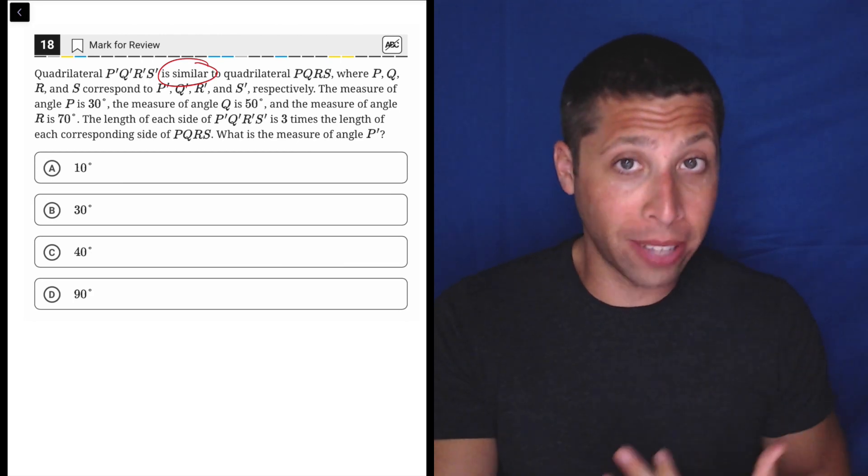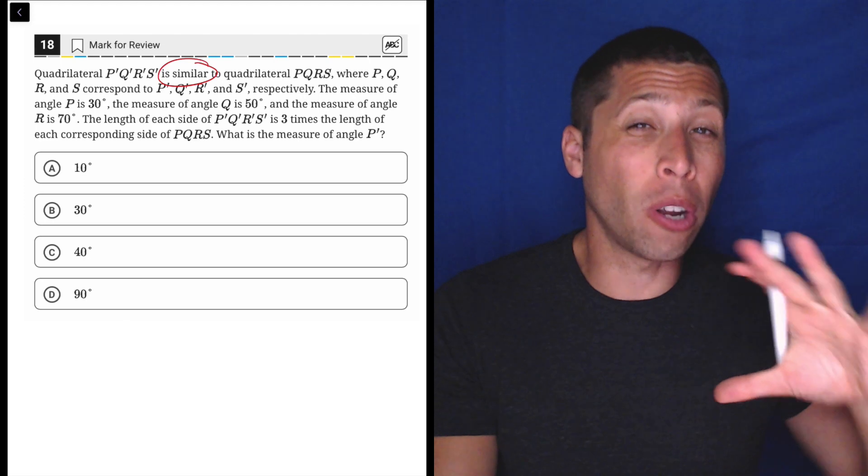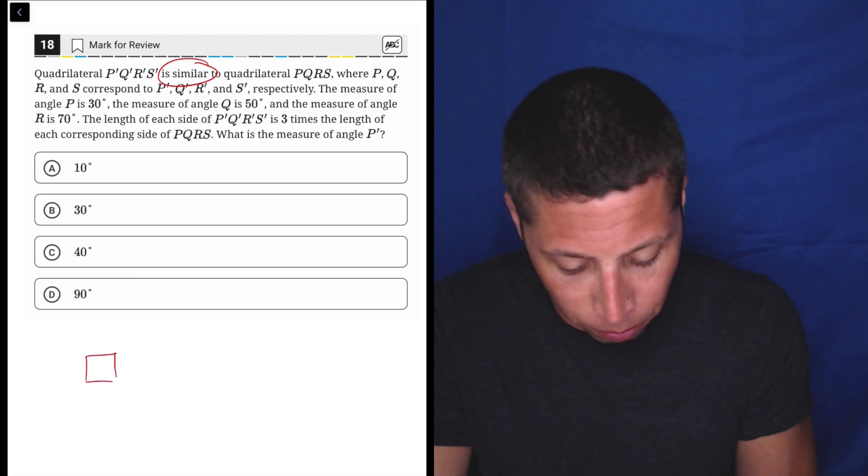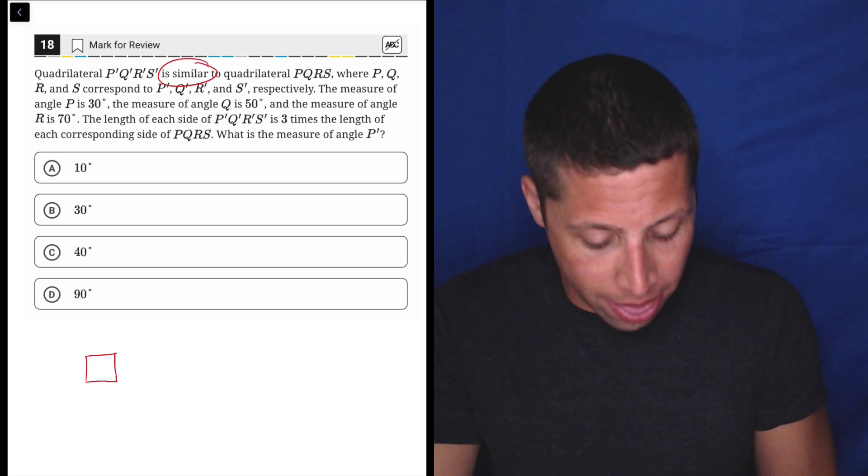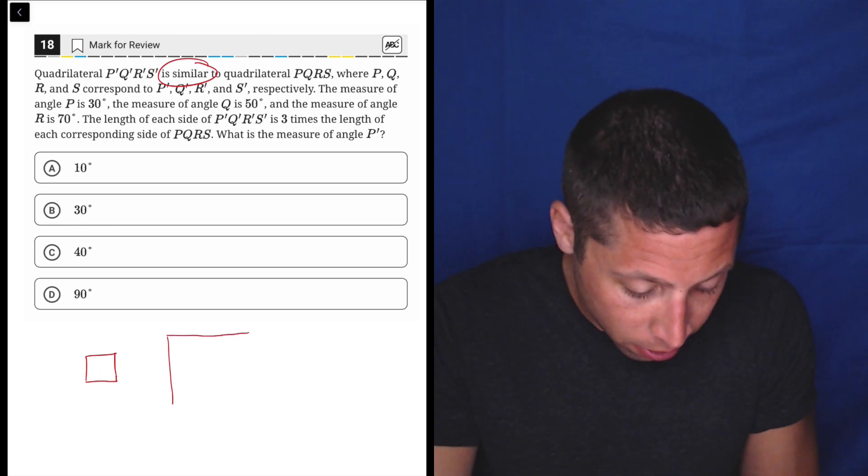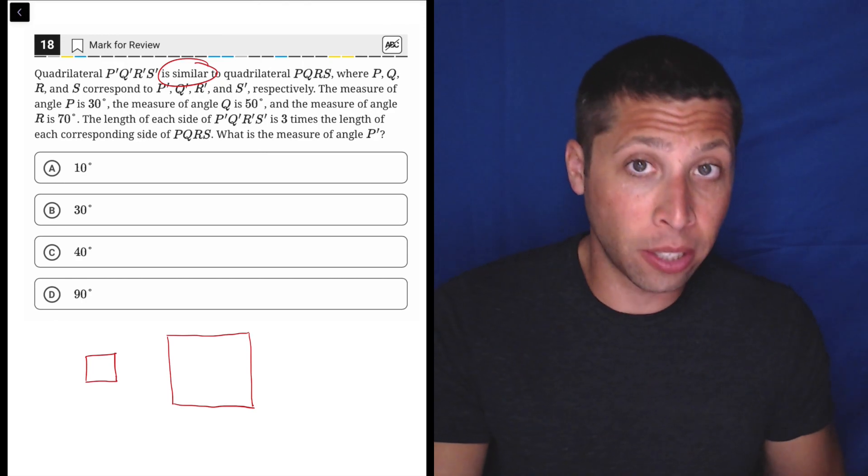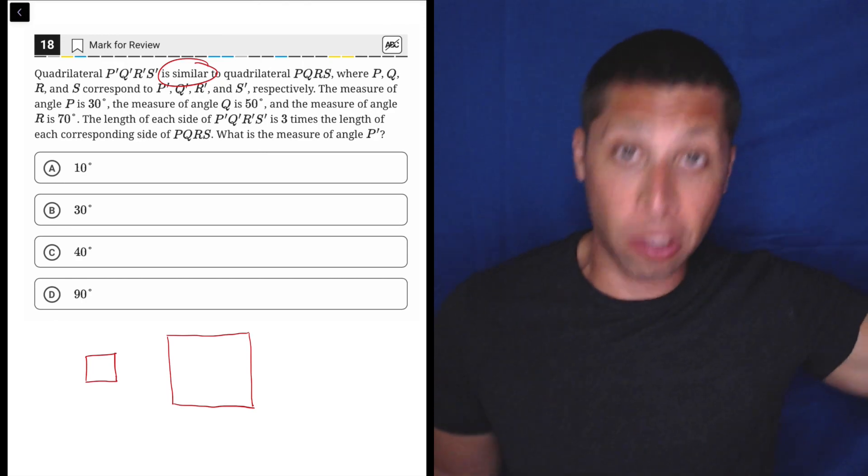If two quadrilaterals are similar, then they are the same overall shape, but one is bigger or smaller than the other. So just to keep it simple - if I drew a square, that square is similar to this square because they're both in the same overall proportions for their sides, but one is just bigger and smaller.